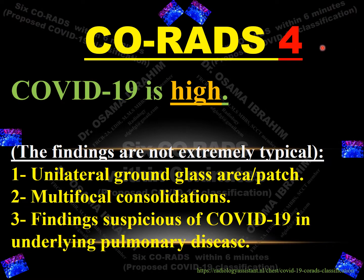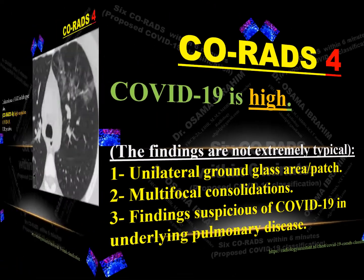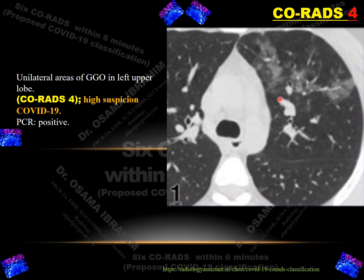Next is CO-RADS 4, where COVID-19 suspicion is high. If the CT findings are not extremely typical — like unifocal, unilateral ground glass areas, or patchy multifocal consolidations — or findings suspicious of COVID-19 in underlying pulmonary disease, these situations are classified as CO-RADS 4. A patient with patchy areas of ground glass opacity is classified as CO-RADS 4, high suspicion of COVID-19, which was confirmed by PCR as positive.